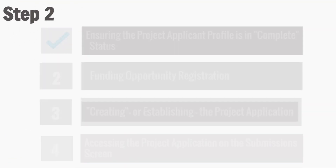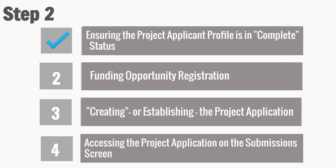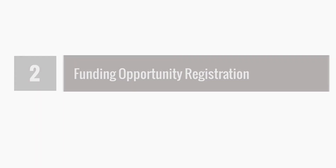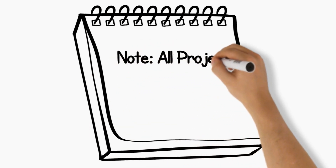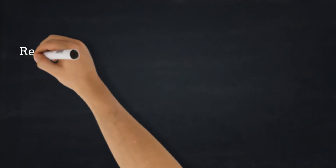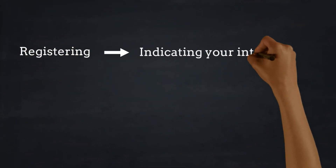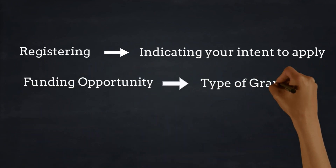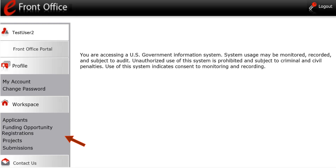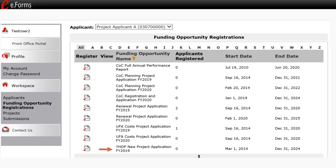Step 2: After ensuring that the project applicant profile is in complete mode, you can move to the next step — Funding Opportunity Registration. All project applicants must register their organization for the applicable project application funding opportunity. Registering for the funding opportunity enables project applicants to apply for funds during the associated competition. Registering in this context means indicating your intent to apply, and funding opportunity refers to the type of grant for which you are applying. To register the organization, select Funding Opportunity Registrations on the left menu bar. Next, select the Register icon adjacent to the correct item.